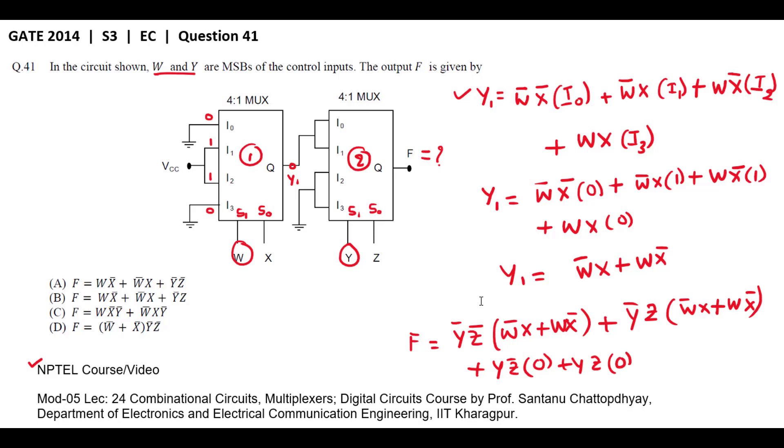This equation gives F equals to, we can take this term common, W bar X plus W X bar in operation with Y bar Z plus Y Z. When you take Y bar common here, this equals to W bar X plus W X bar times Z plus Z bar, which equals to logic 1. So this becomes W bar X Y bar plus W X bar Y bar.